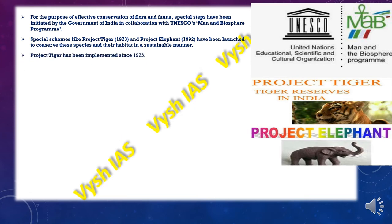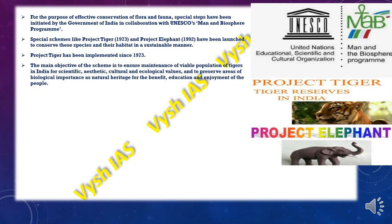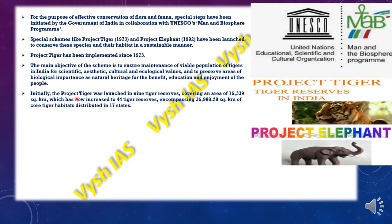Project Tiger was implemented since 1973. The main objective is to ensure a viable population of tigers and maintain areas of biological importance for scientific, aesthetic, cultural and ecological values, and to preserve areas for the education and enjoyment of people. Initially launched in nine tiger reserves covering 16,339 square kilometers, it has now increased to 46 tiger reserves, with the area growing to 36,988.28 square kilometers of core tiger habitats distributed across 17 states. These core regions are exclusively for animals, with no human settlement or human-wildlife interaction.